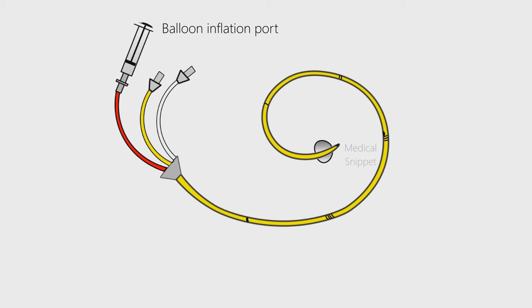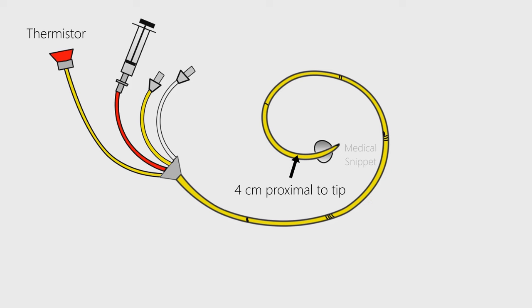Third is the balloon inflation port. Fourth is the thermistor; its lumen terminates 4 cm proximal to the tip of the catheter. It is used to measure cardiac output using thermodilution technique. The catheter which we are going to see does not have the thermistor.